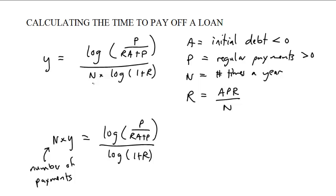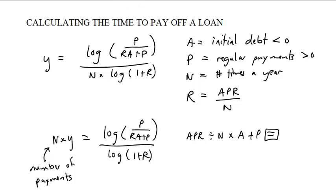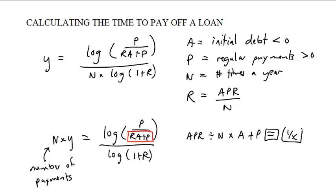A lot of people are still having trouble with calculators. If I were to work this out, I would type in the APR as a decimal, then divided by n, then times a — which is a negative number — plus p, and then hit the equals button. That would give me the inner part of the numerator. Then I would hit 1 over x to put it in the denominator, and then type in times p and equals.